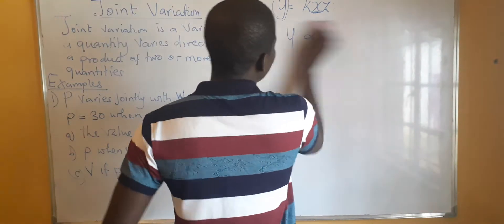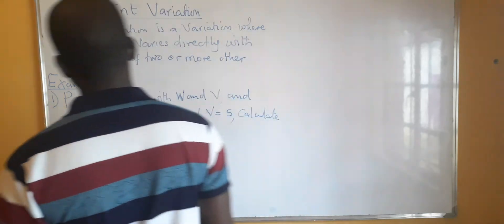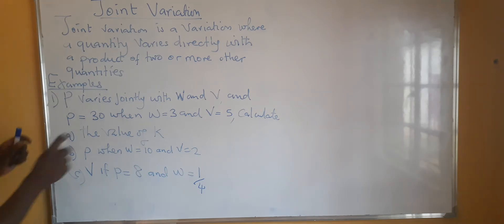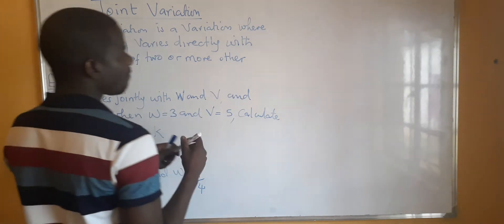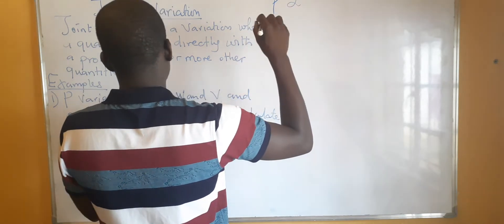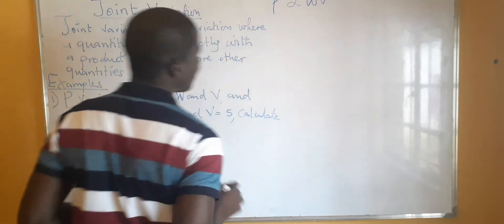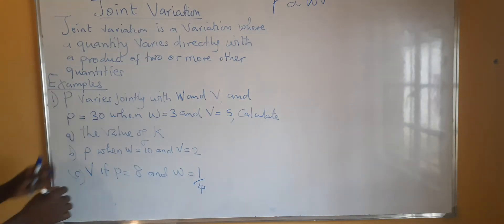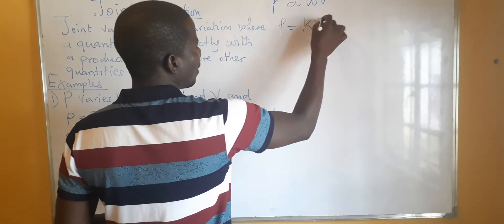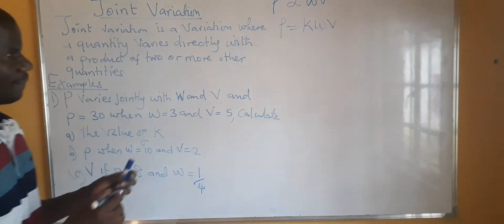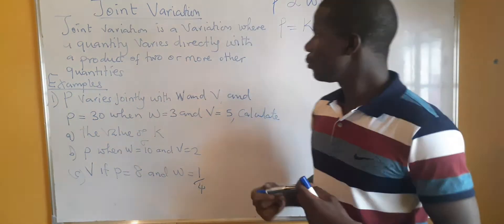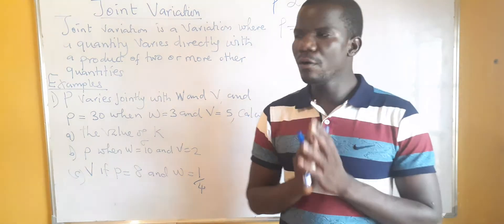Let us look at the question. P varies jointly with W and V. When we want to write this as an equation, it's going to be P equals k times W times V. Now, the first step is to determine the value of k, which is the constant of variation. So what is the value of k when W equals 3, P equals 3, and V equals 5?